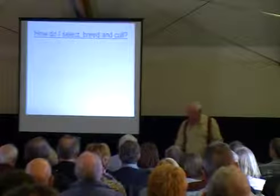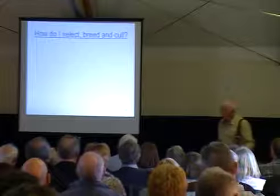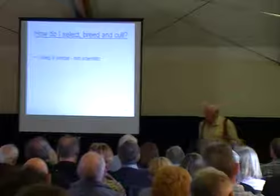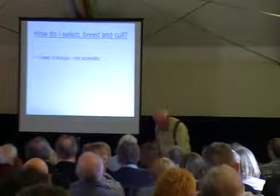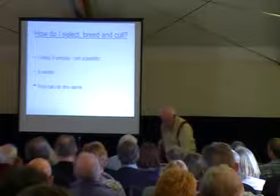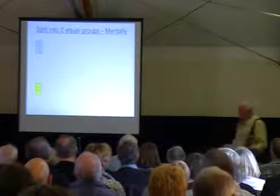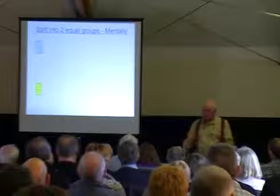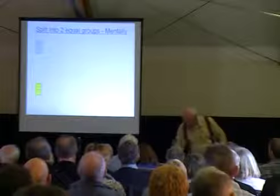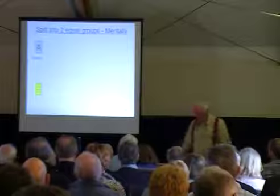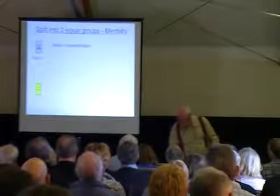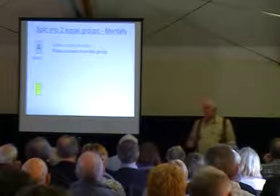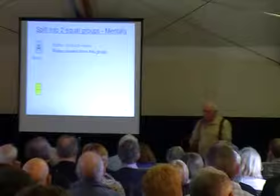So how do I select, breed and cull? Well, it's a bit simple - not scientific at all. Some of the geneticists amongst us will probably have a bit of a laugh about this, but it works for me. All I do is take my colonies, however many I've got, and split them into two roughly equal groups - it's a mental thing. I call them group A - they're the better ones, they've got the characteristics that I want. And I'm raising queens from within that group and using them. I'm not replacing queens unless there's something wrong.